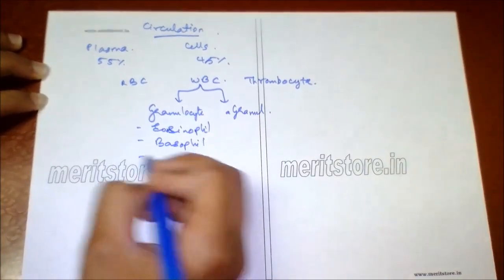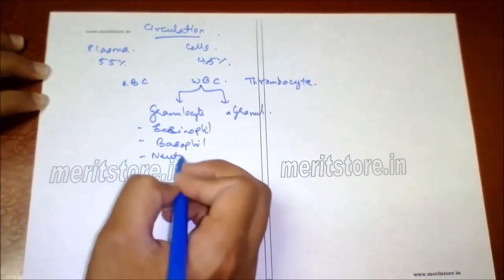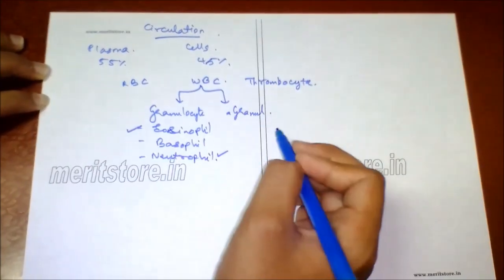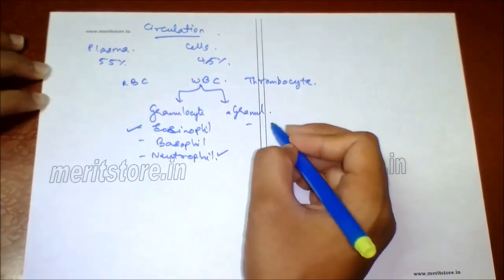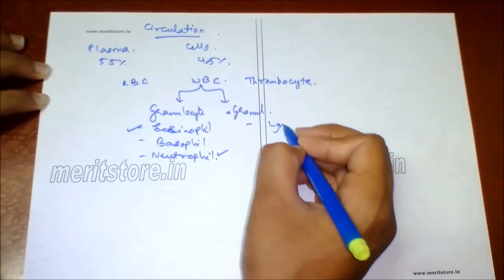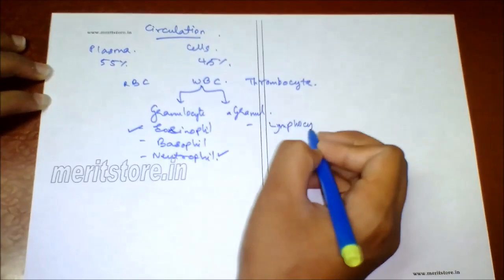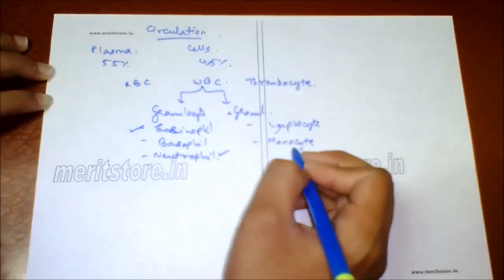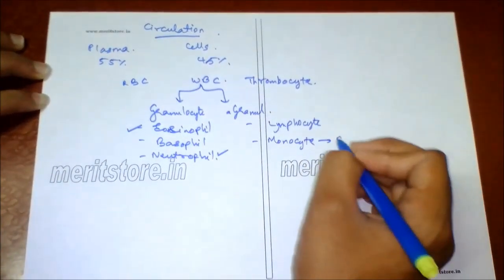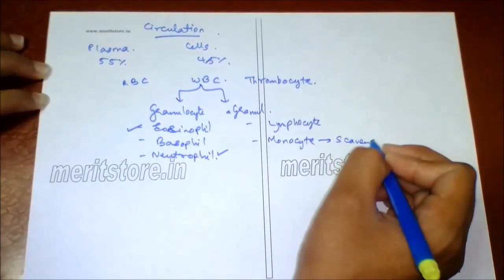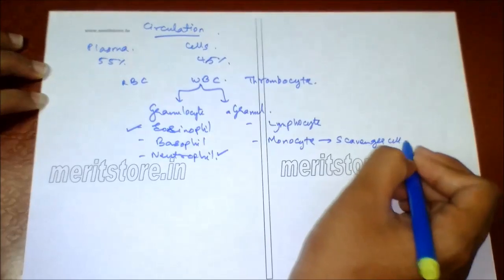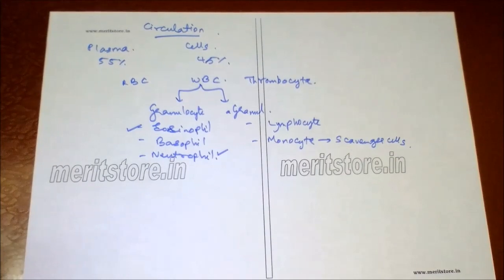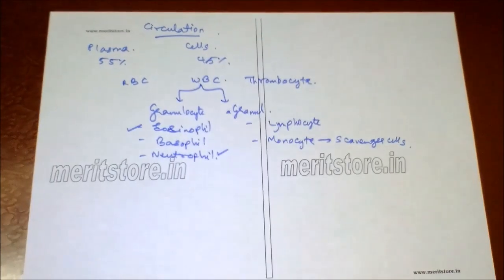Agranulocytes consist of lymphocytes and monocytes. Monocytes are known as scavenger cells and their nucleus is kidney-shaped. These are the cells of the circulatory system.